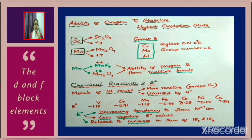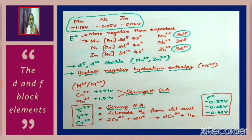Regarding chemical reactivity and E⁰ values, the metals of the first transition series are generally more reactive — except copper — and are oxidized by H⁺ ions. From the E⁰ values of vanadium, chromium, manganese, iron, cobalt, nickel, and copper, there is a decreasing tendency to form M²⁺ ions. Less negative E⁰ values are related to an increase in the sum of the first and second ionization enthalpies.